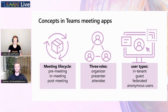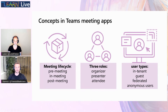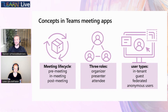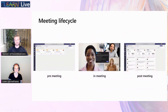With three meeting lifecycle stages, three roles, and four user types, we can create a lot of experiences in an in-meeting app. You can tailor-make a pre-meeting experience for a presenter and another for an organizer, and go different for a federated user versus a guest user. You can create an experience for each of those user types, all the roles, and the timing in the meeting lifecycle to give the best experience. You can make it easy and do the same thing for all three roles and all user types, having one UX for pre-meeting, one for in-meeting, and one for post-meeting.